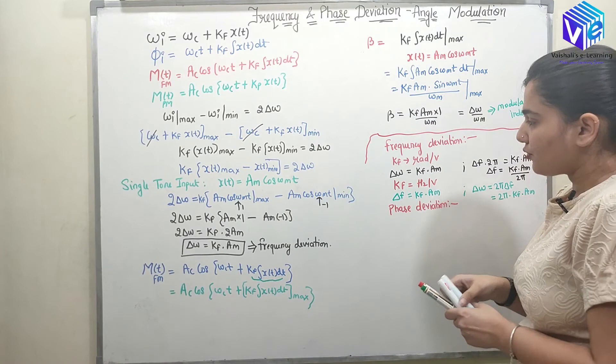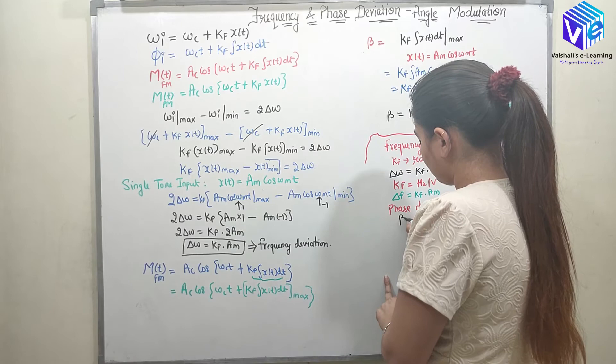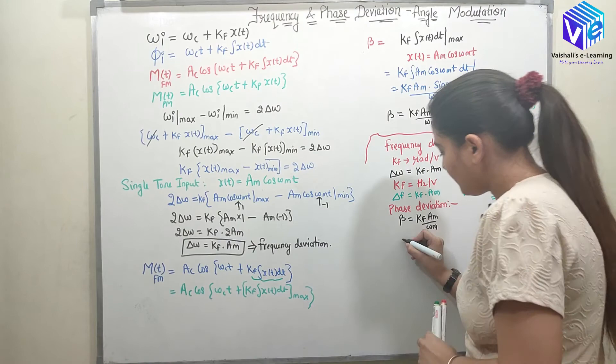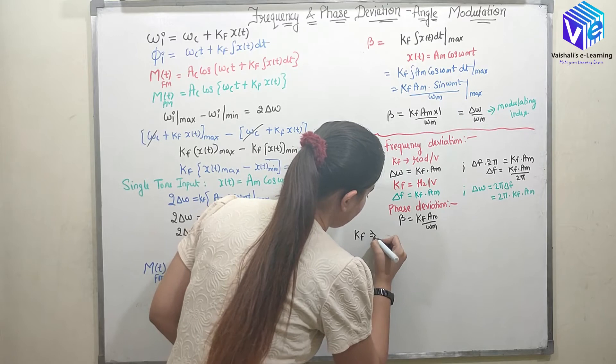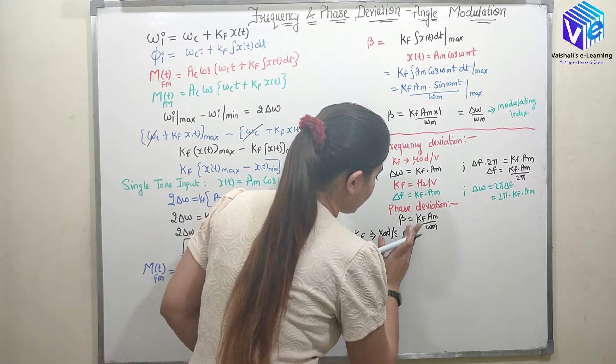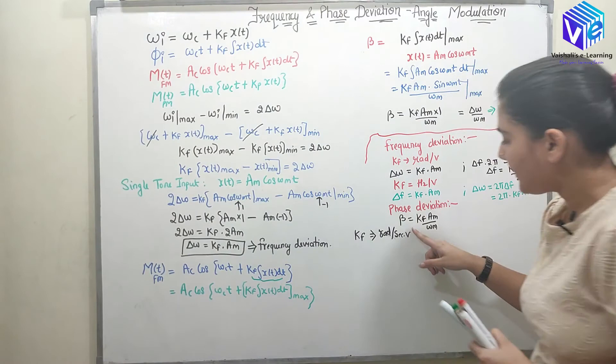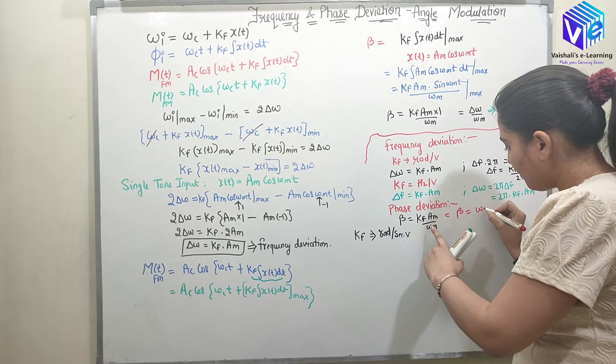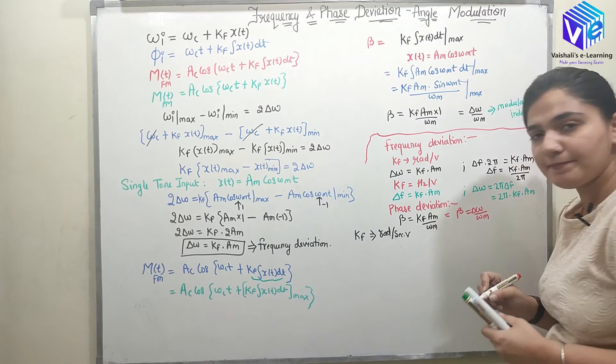For phase deviation, beta = k_f * A_m / omega_m. If k_f is given in radians per second per volt, then k_f * A_m gives delta_omega, and dividing by omega_m gives beta = delta_omega / omega_m.